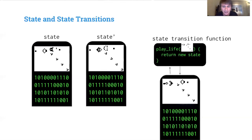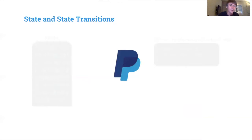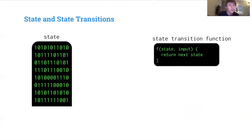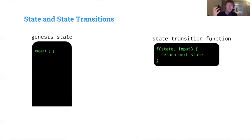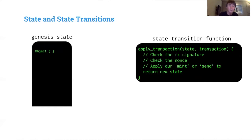Now let's go practical and think about our actual payment processor. We have a genesis state — the first, initial state. 'Genesis state' is where the word 'genesis block' comes from in blockchains. Our state transition function is 'apply transactions,' which takes our state and a transaction and applies it.